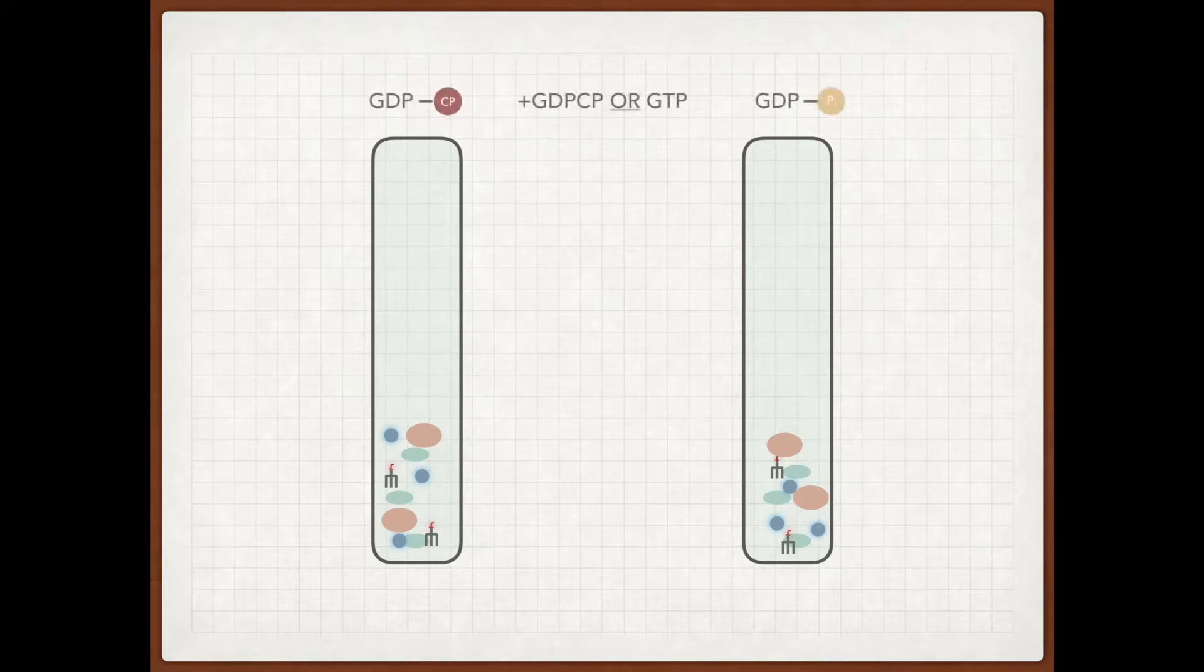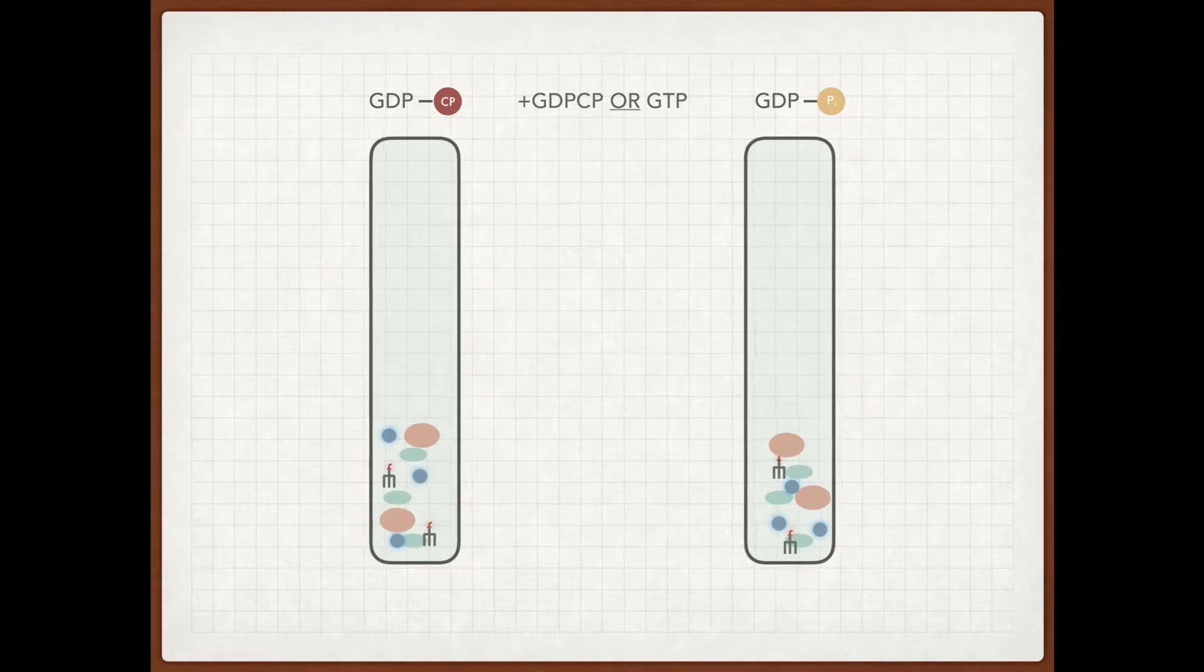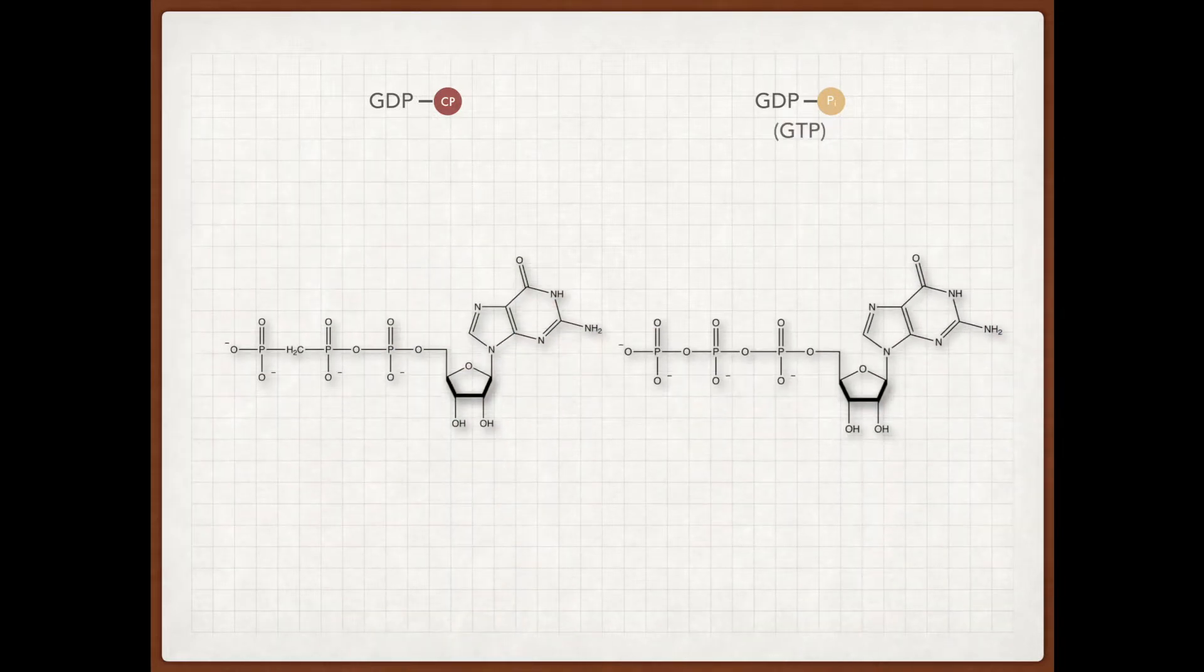And then in one of the reactions they added GDPCP, and in the other they added GTP. So you may be wondering, what's the difference between these two? Well, if we look at the structures, you can see that they're pretty similar. Essentially, GDPCP is an analog to GTP.